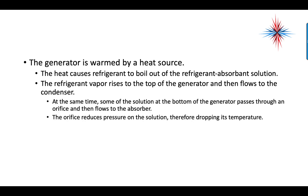A generator is warmed by a heat source. The heat causes the refrigerant to boil out of the refrigerant-absorbent solution — we heat the mixture and the ammonia comes out of solution. The refrigerant vapor rises to the top of the generator and flows to the condenser. At the same time, some of the solution at the bottom of the generator passes through an orifice and flows to the absorber, where the orifice reduces the pressure and therefore drops the temperature.